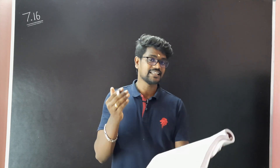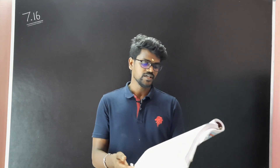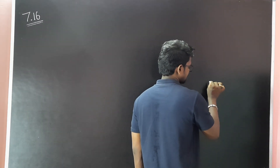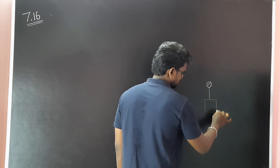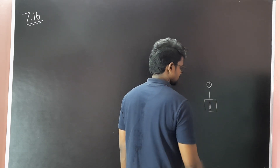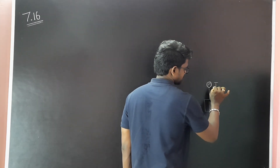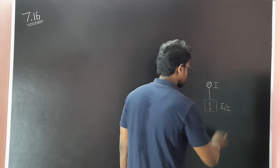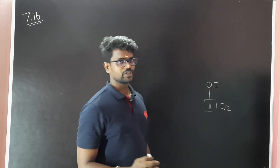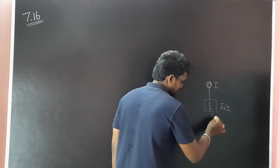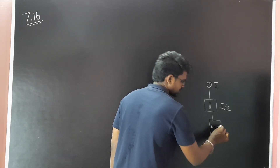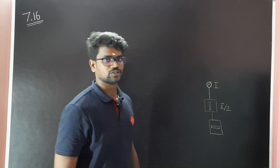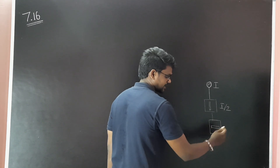When an unpolarized light is incident, it falls on the first Polaroid. If you look at the first case, it will be 90 degrees. This light comes from a Polaroid. If you look at the intensity I, you will see one component is vertical and the other is horizontal. This is the same Polaroid. If you look at the other Polaroid, it will be horizontal — which means it will be 90 degrees.